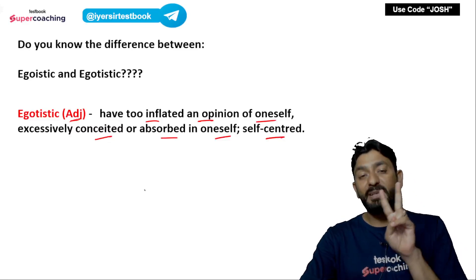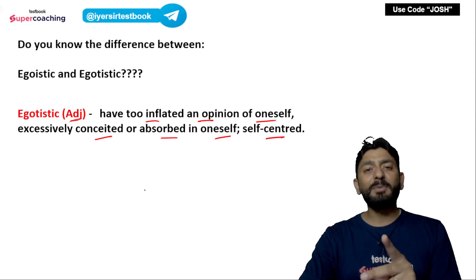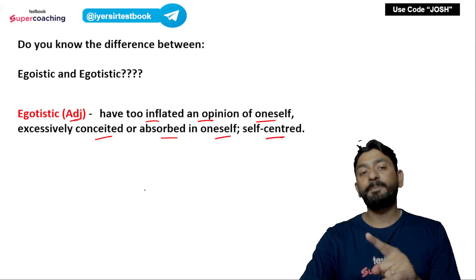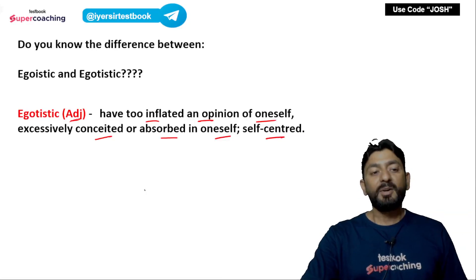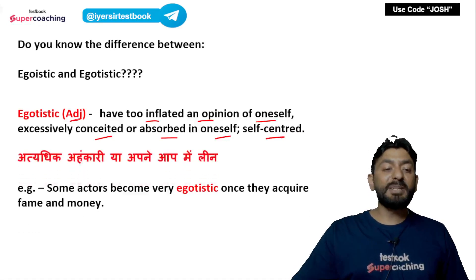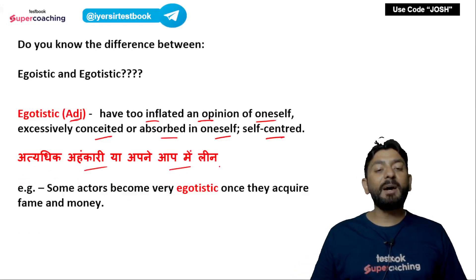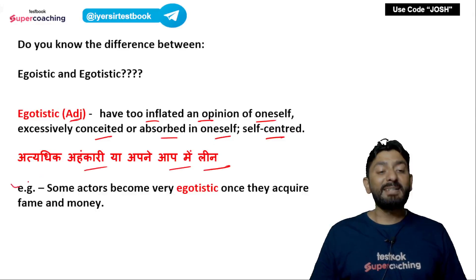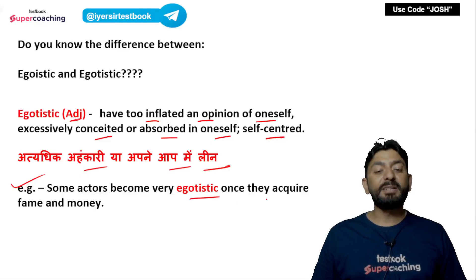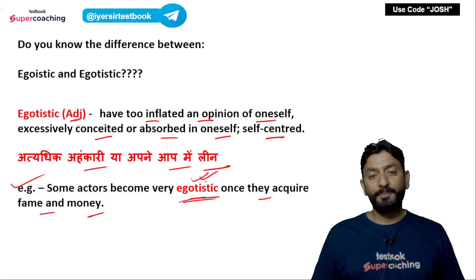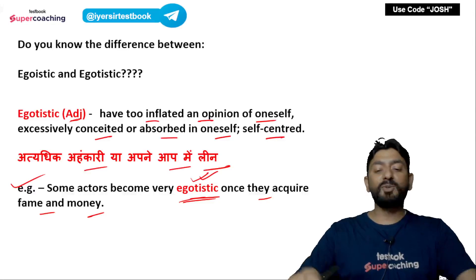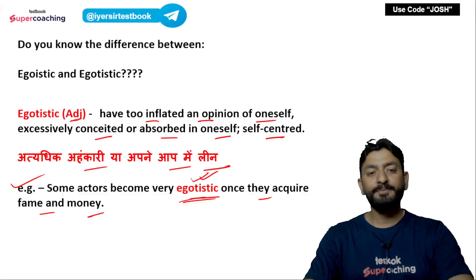The difference is: स्वार्थी means अपनी ही हितों का ध्यान रखना दूसरों से पहले, whereas अहंकारी means the person feels 'मैं ही सब कुछ हूँ, बाकी सारे नीचे हैं'. Egotistic in Hindi: अत्याधिक अहंकारी या अपने आप में लीन. Example sentence: Some actors become very egotistic once they acquire fame and money — कुछ actors जब प्रख्यात होते हैं और उन्हें बहुत ज़्यादा पैसा मिल जाता है, तो बहुत अहंकारी हो जाते हैं.